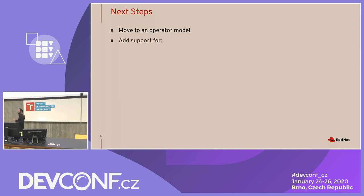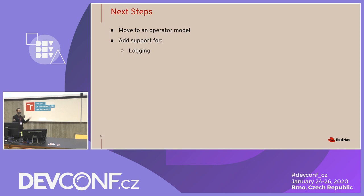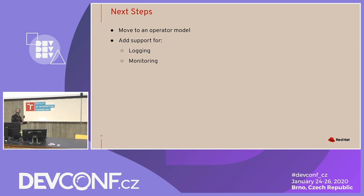We don't want customers to go through the pain of creating a Windows VM and installing the required runtime themselves. The operator model will streamline that whole process. At the same time, we currently have just basic Windows workload functionality. OpenShift has amazing logging functionality, and we want to plug into that so Windows and Linux are on the same plane. The same goes for monitoring.